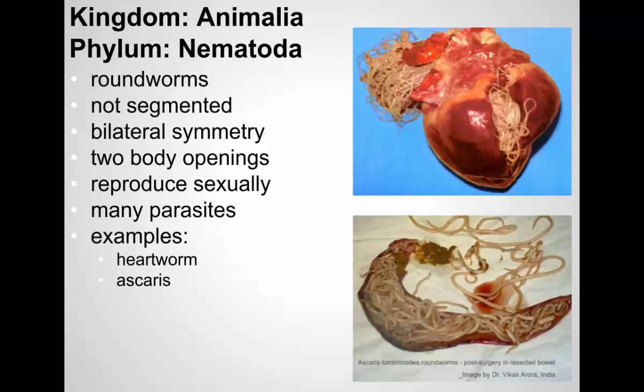Another group are the roundworms — nematodes. Nematodes are another type of worm; they're not segmented. They have bilateral symmetry and two body openings. Many nematodes are parasites, including those that cause heartworm. This is the heart of a dog that died of heartworm — its heart is completely clogged with the nematodes that cause heartworm. Some do affect humans as well. Ascaris lumbricoides is a roundworm — an intestinal parasite. This is a person's large intestine completely clogged with these worms that have reproduced and grown inside. You could die if they clog the flow of food through your digestive tract.